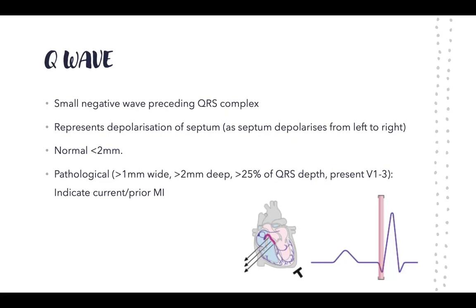Now we're up to the QRS complex. We'll start with what the Q wave is — we're going to break it down into each part. The Q wave is the first negative wave preceding the QRS complex, and it represents the depolarization of the septum.